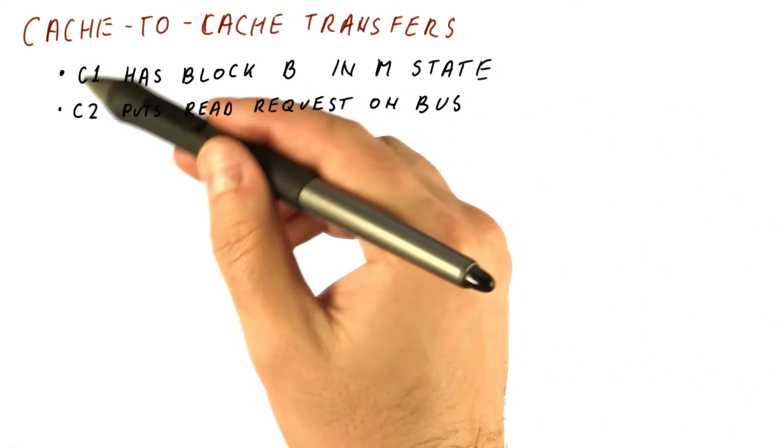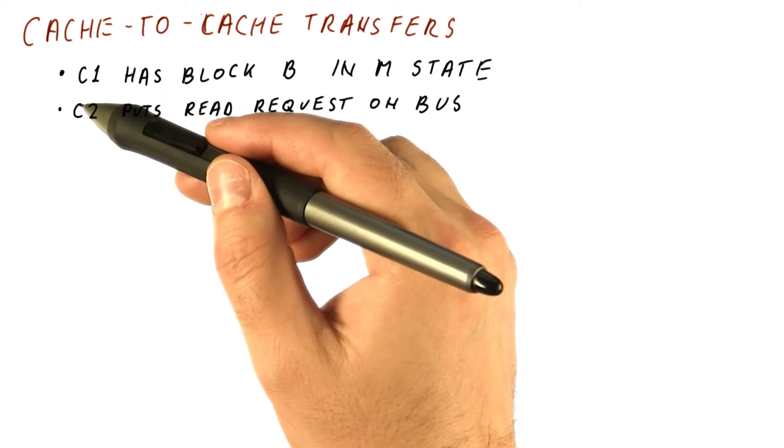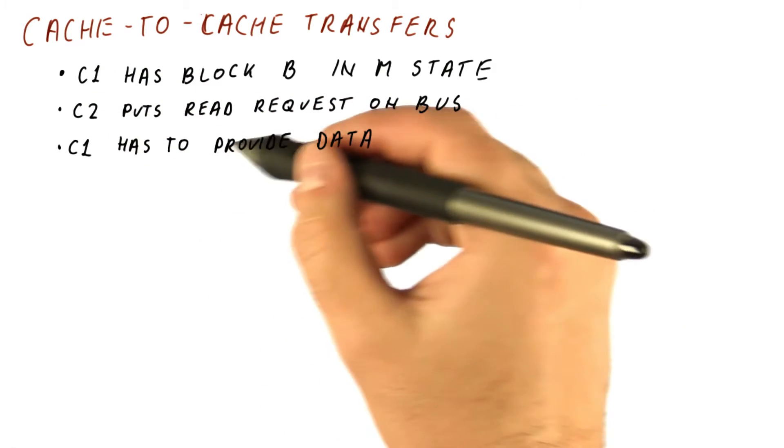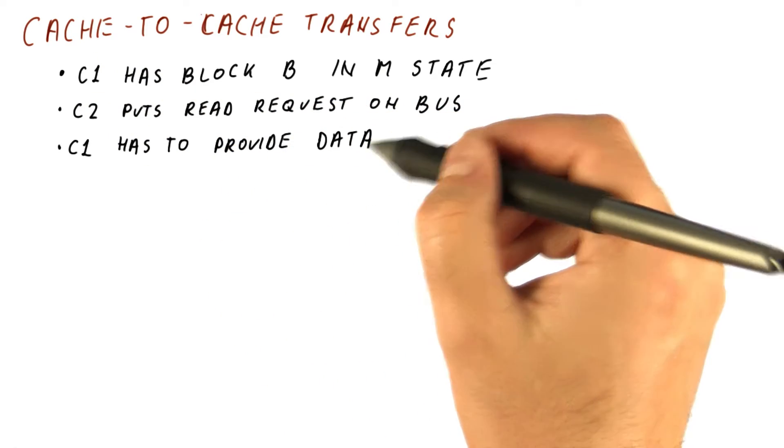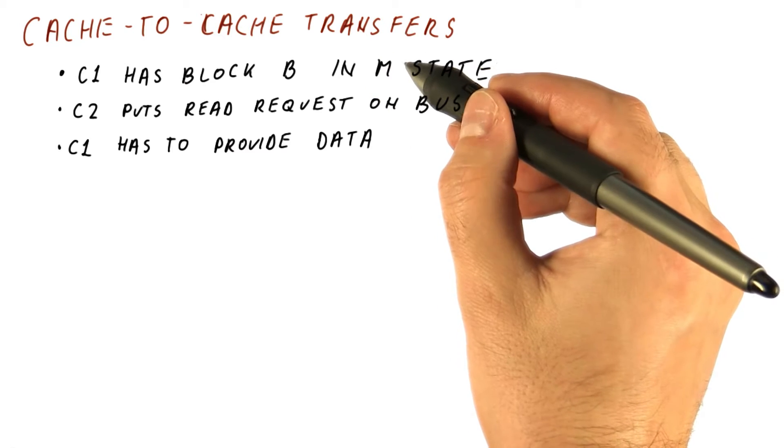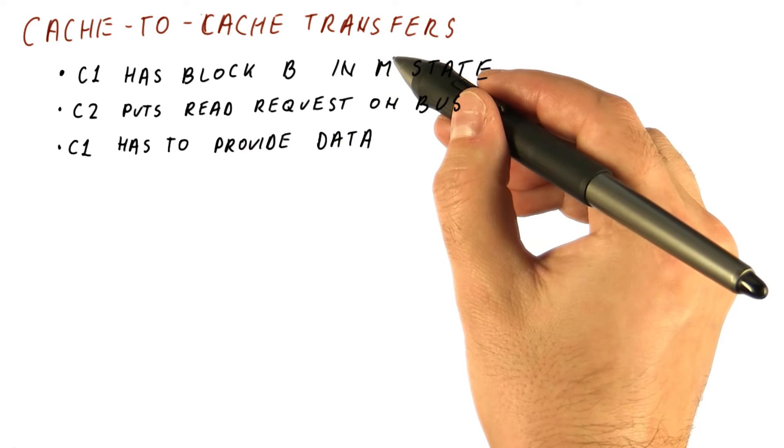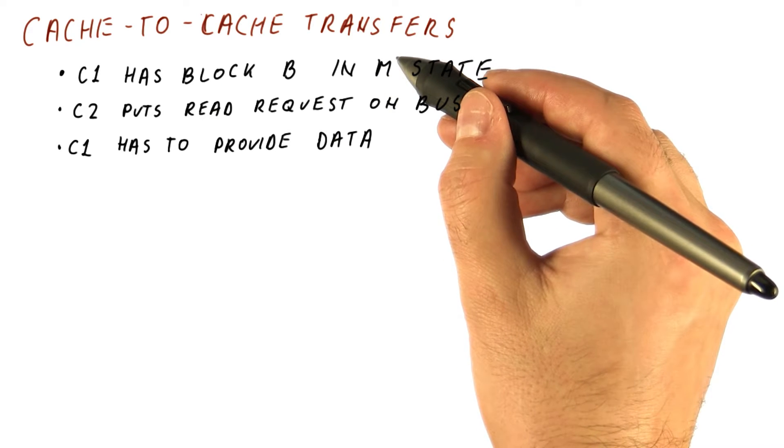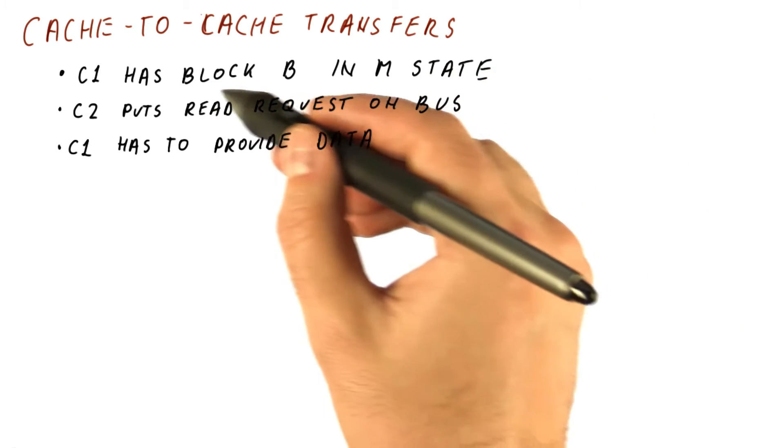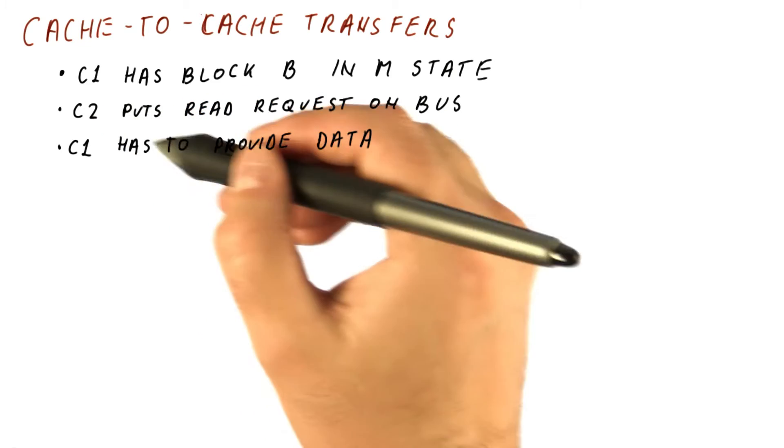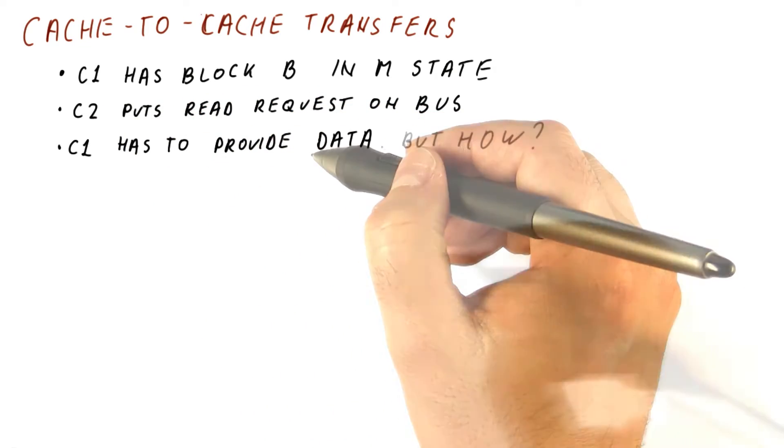At this point, C1 has to react because C1 is the one that has to provide the data. If we have the block in the M state, that means that the only up-to-date copy in the system is our copy. Even the memory doesn't have an up-to-date copy. So if the data is going to be sent to C2, it had better be our data. But how?